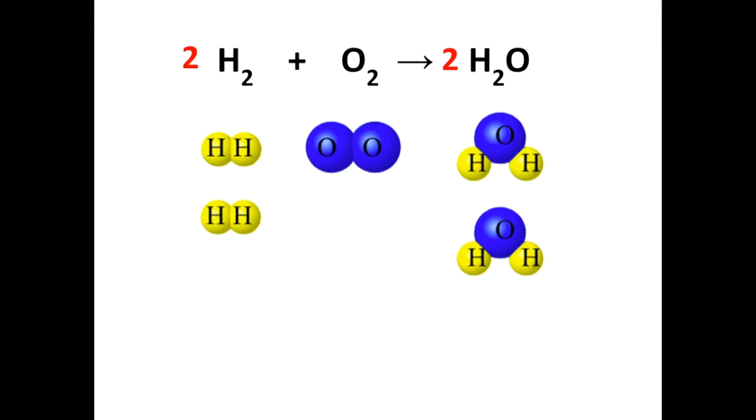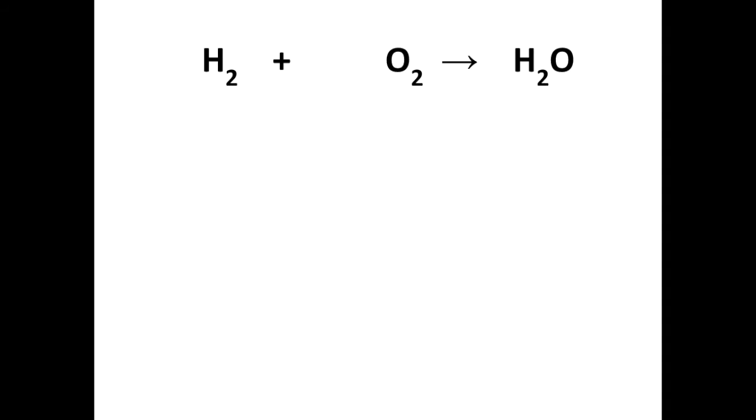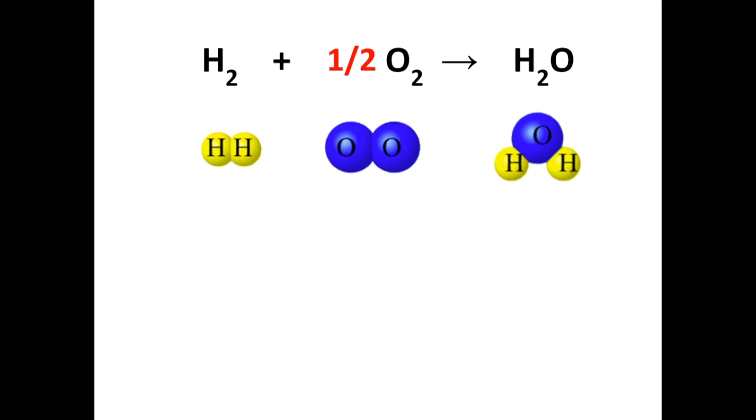Now there is another way you can do this one. And you may not have seen this at GCSE, but instead of doing what we've just done, you can just put a half in front of that O2 molecule. You're not saying we're just going to react the H2 with an oxygen atom. That's not what we're saying. Because if you've seen the equation, the formula is still O2.